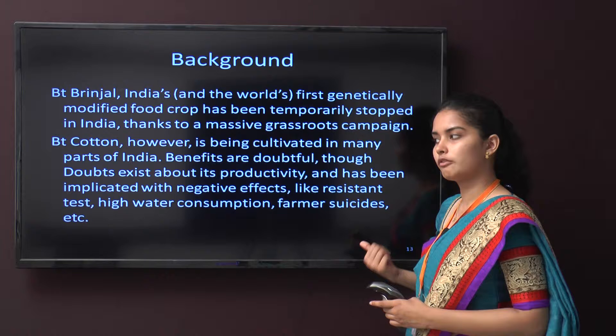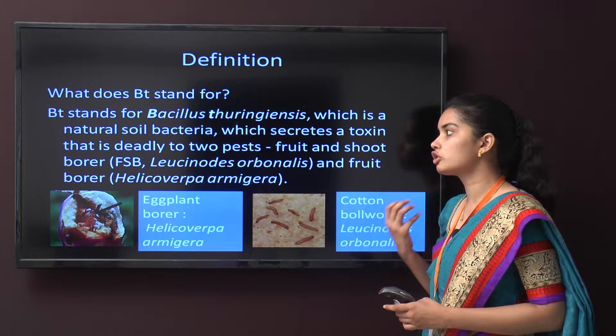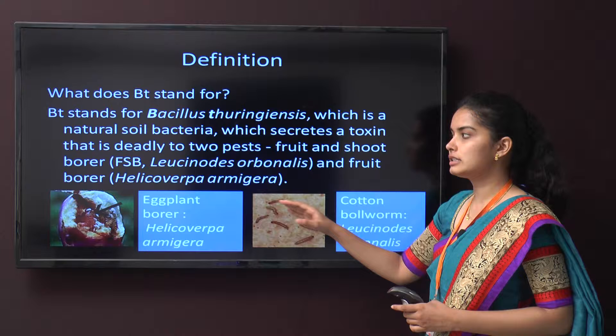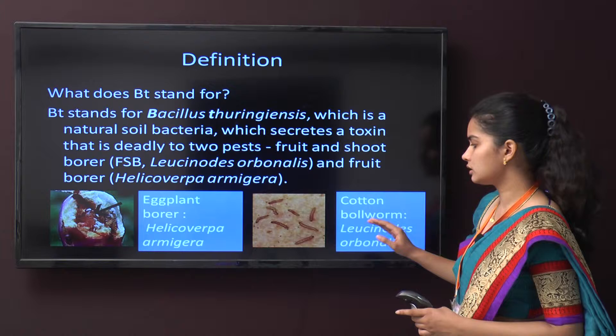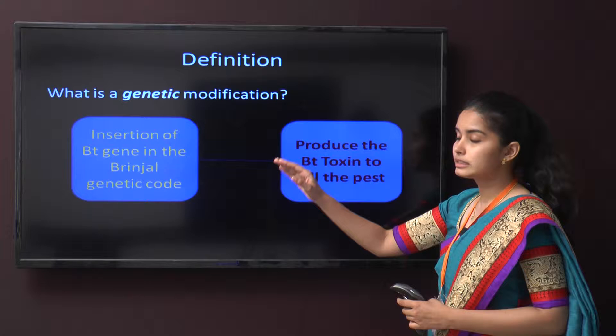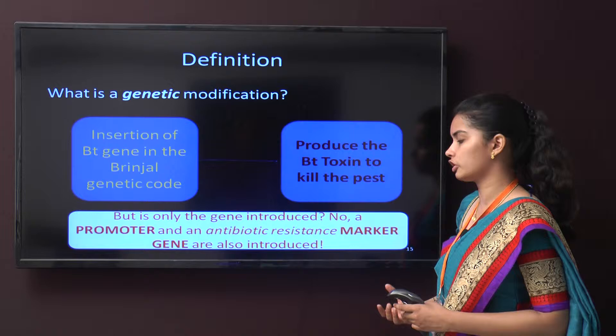What does BT stand for? BT stands for Bacillus thuringiensis, a natural soil bacterium that secretes a toxin deadly to two pests: the fruit and shoot borer (FSB) and the fruit borer Helicoverpa armigera. The BT gene is inserted into Brinjal, allowing the plant to produce BT toxin that kills the pest. Along with the BT gene, a promoter and antibiotic resistance marker gene are also introduced.